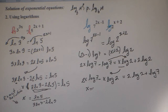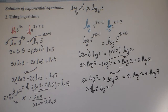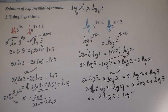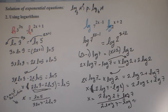We factor x out: taking x from both terms on the left we get x times 2 log of 7 minus log of 2 equals 2 log of 2 plus log of 7. Then we divide both sides by 2 log of 7 minus log of 2, and we get x equals 2 log of 2 plus log of 7 over 2 log of 7 minus log of 2.